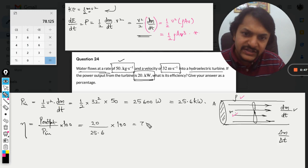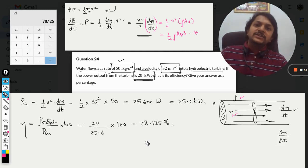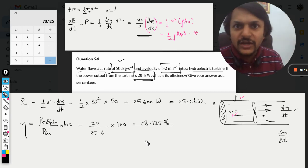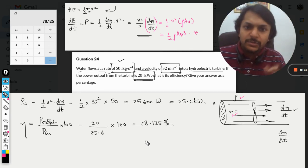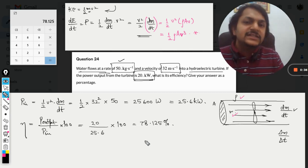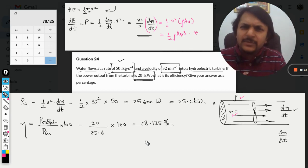Our efficiency is coming out to be 78.125 percent, so this is the efficiency of our turbine. My dear students, this is how we do this question. This is a very typical question, I would say.